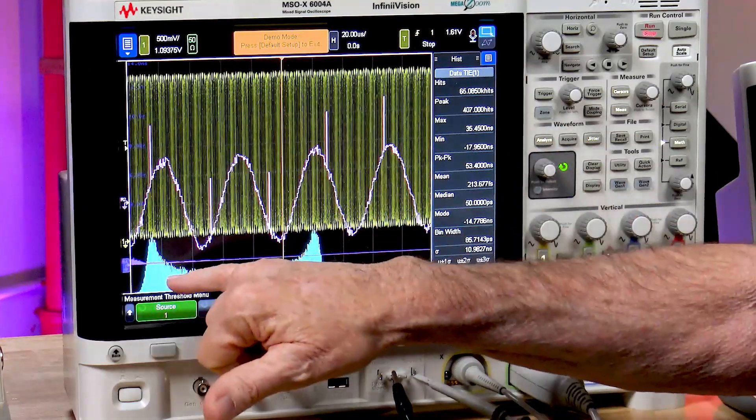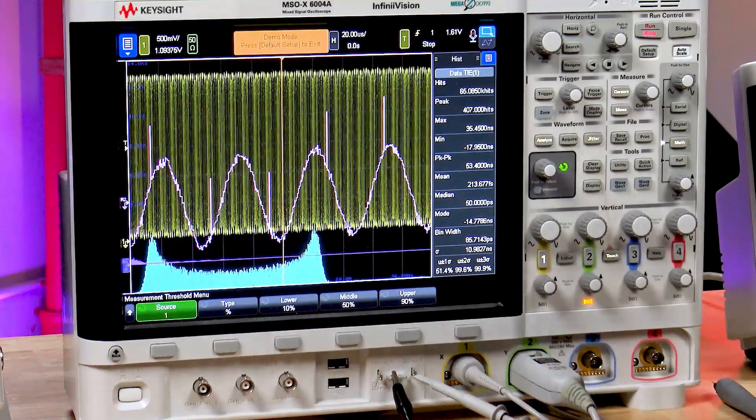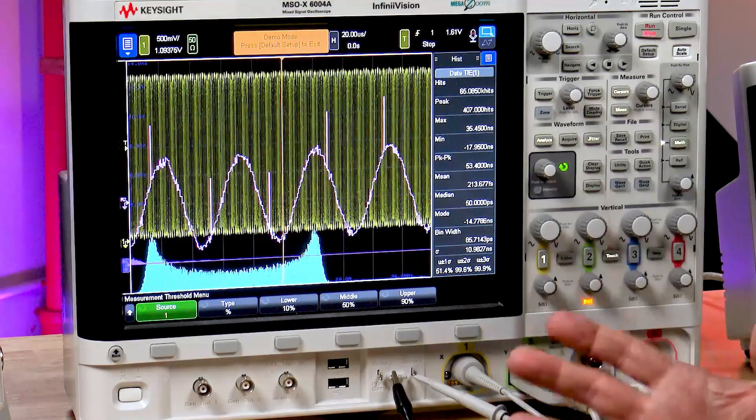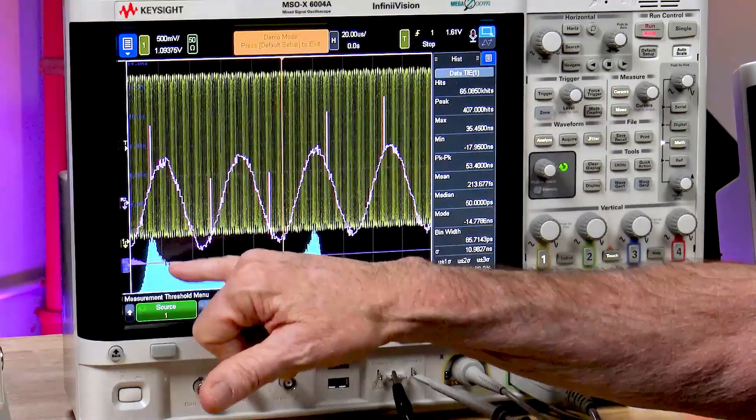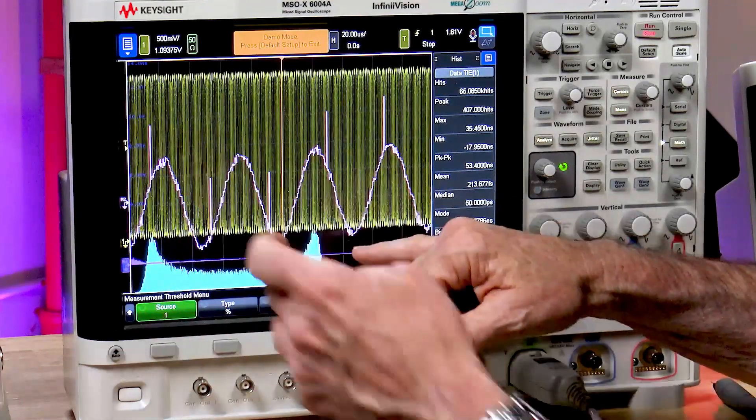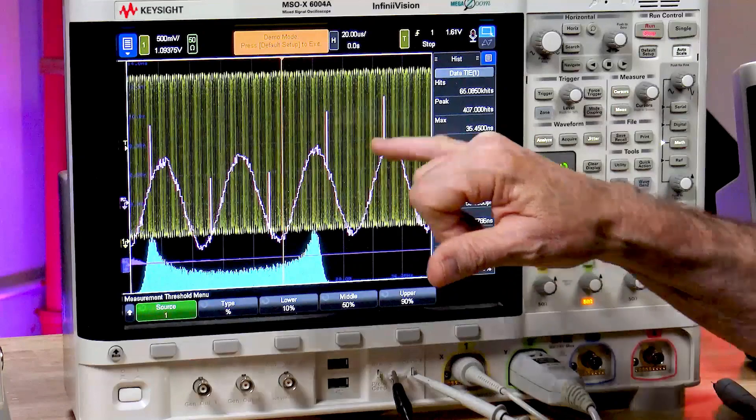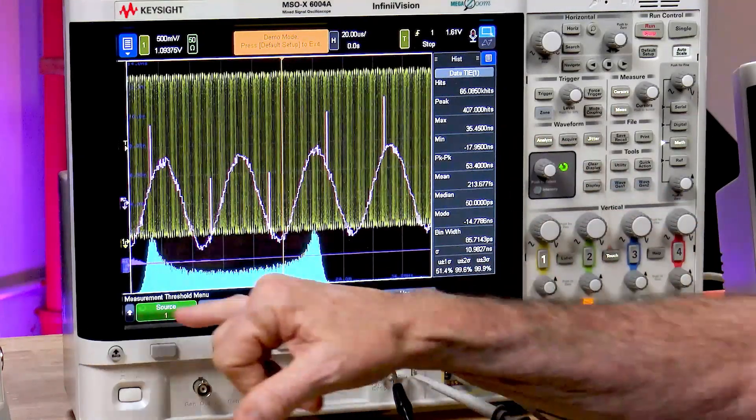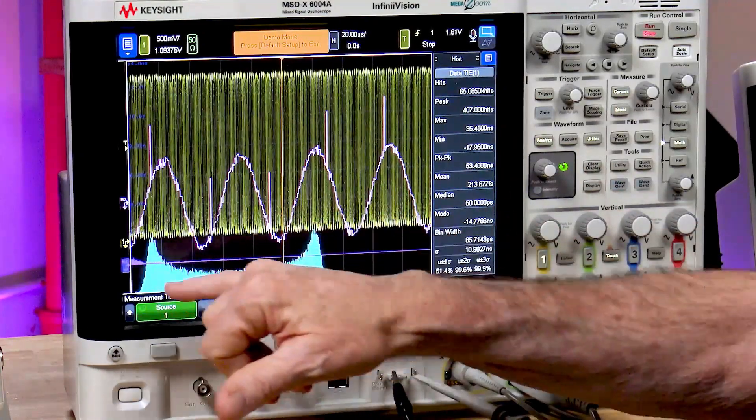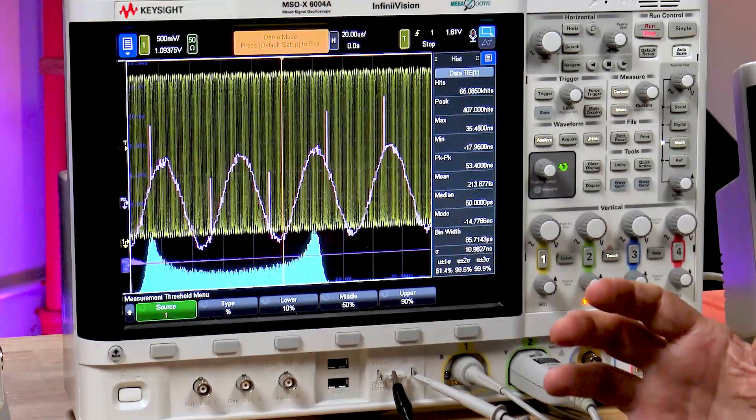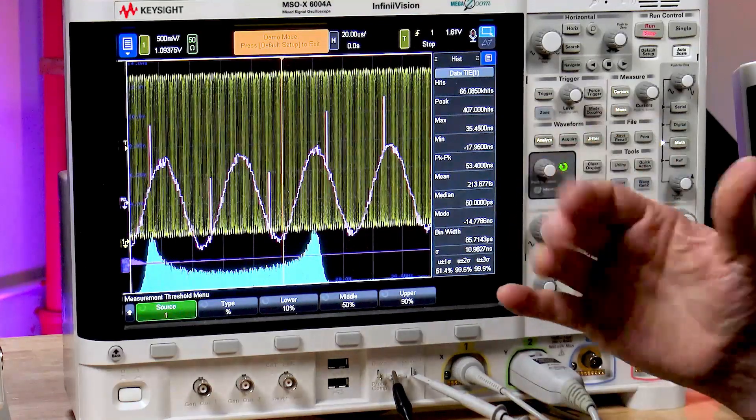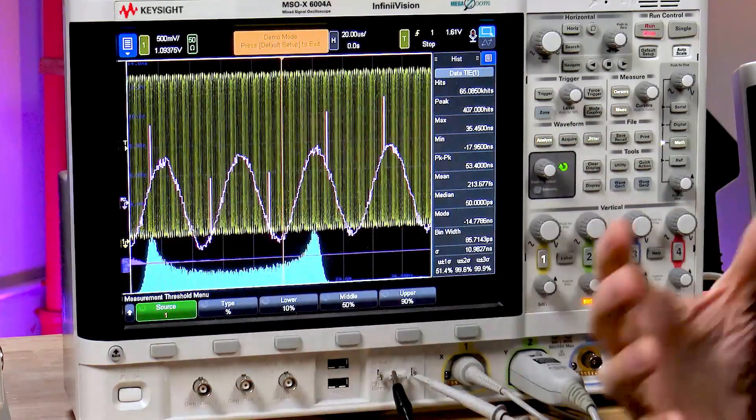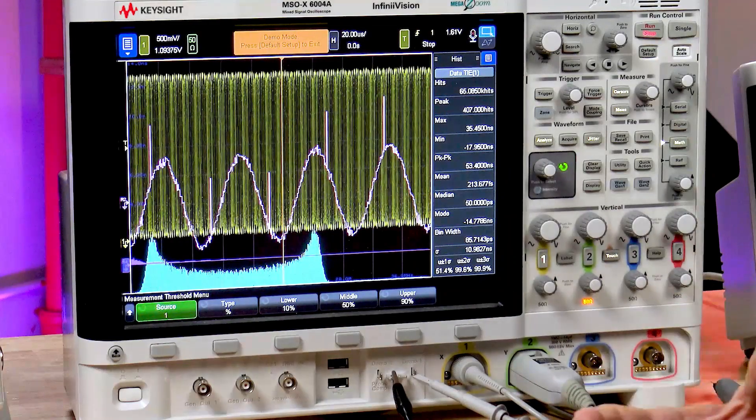And also, the sort of bluish plot down here, this is our histogram. It plots it statistically. And I can see that it's bimodal, which sinusoidal jitter or modulation would give you this bimodal distribution of jitter. If we had just random jitter, you'd see what would look like a Gaussian distribution.